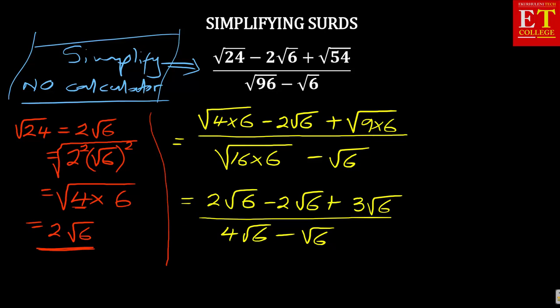But one thing that I can always advise is to say maybe factorize what is common. You can see that root of 6 is common here. So here you'll be left with 2 minus 2 plus 3 all over. Again, root of 6 is common. Hence, you have got the 2, the 2 and the 3. Also, root 6, root 6, there is a 1 there. So what you're going to have, you're going to have square root of 6 and it's 4 minus a 1.